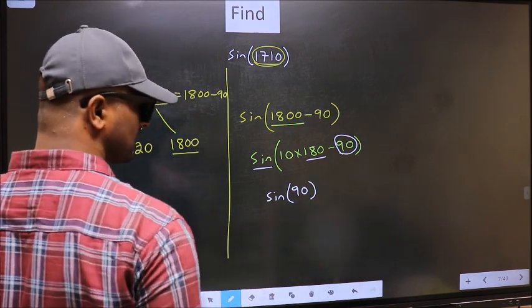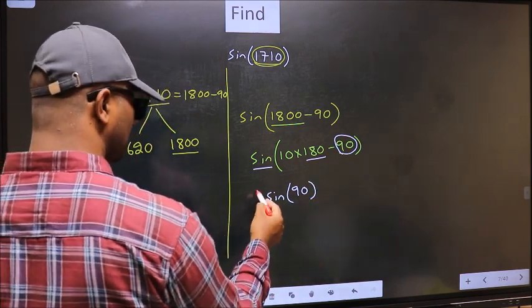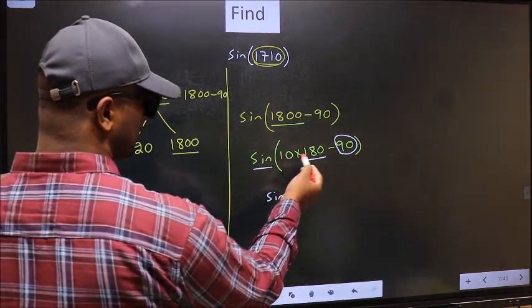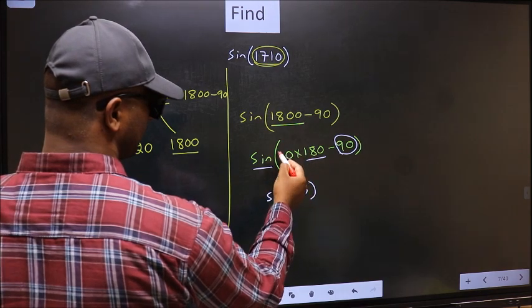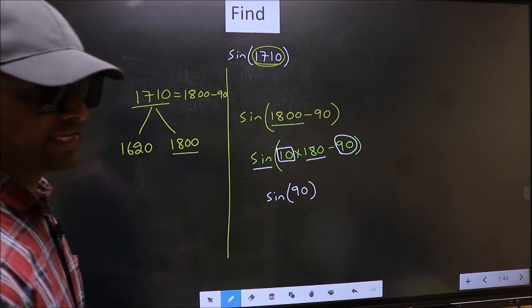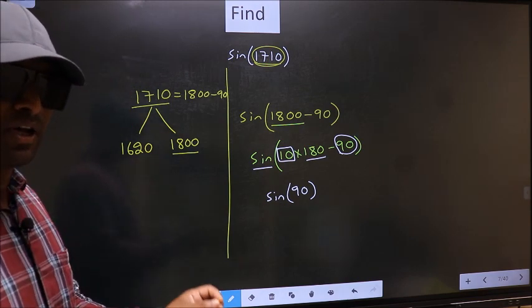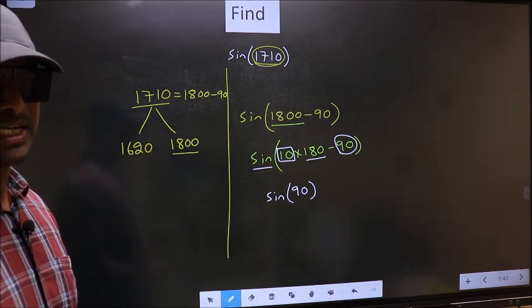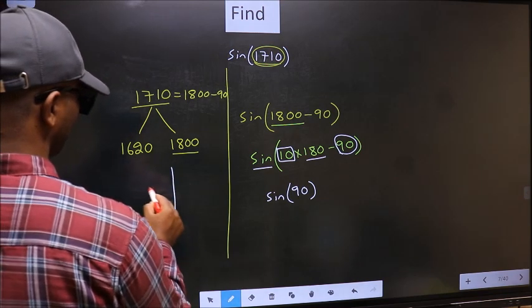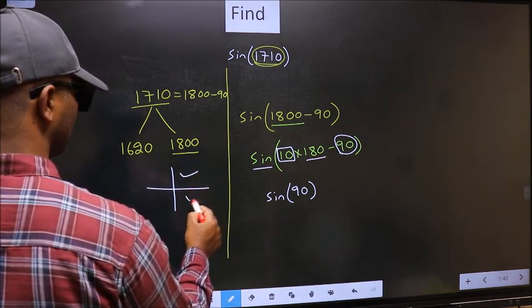Now the question is, will we get here plus or minus? To answer that, we should look at the number before 180. That is 10, and 10 is even. All the even multiples of 180 lie in either the first or in the fourth quadrant.